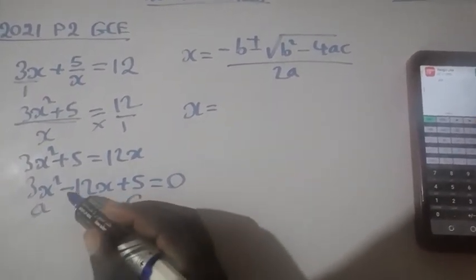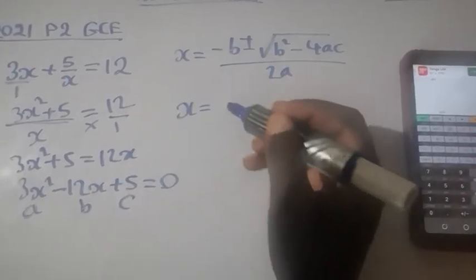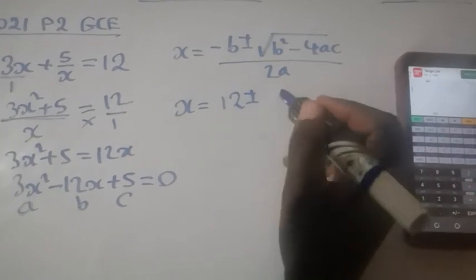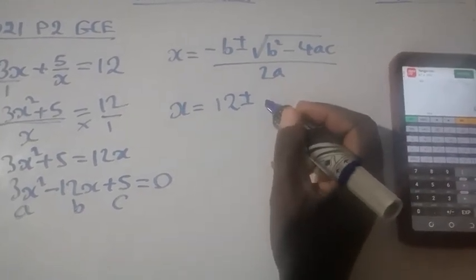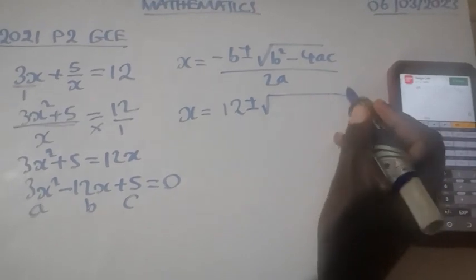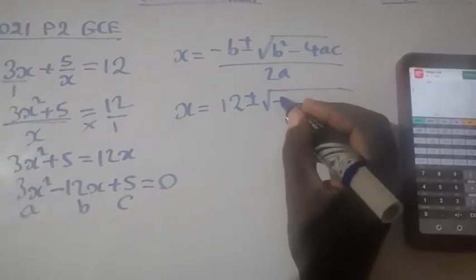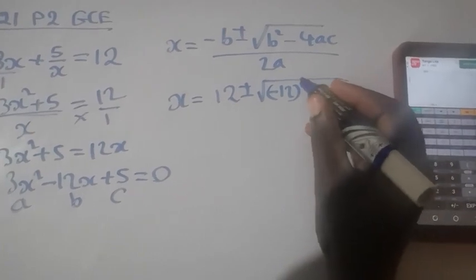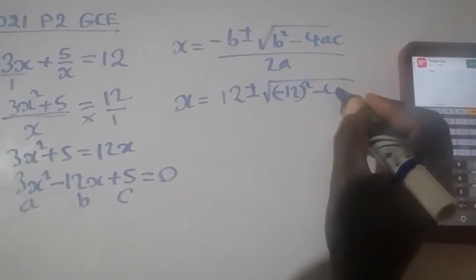So if you multiply negative times negative it's positive, so it will be positive 12 plus or minus, then negative 12 inside the brackets to the power 2, minus 4a.